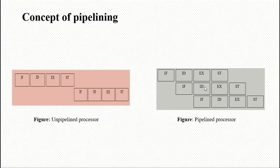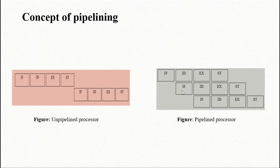In the pipeline concept, when we fetch the first instruction and send it to the decode stage, we immediately fetch the second instruction. When the second instruction goes to decode, the first instruction goes to execute and we fetch the third instruction — this continues for the entire set of instructions. So Fetch, Decode, Execute, and Store are all overlapped, and the time required to execute the set of instructions is much less in the pipeline concept.